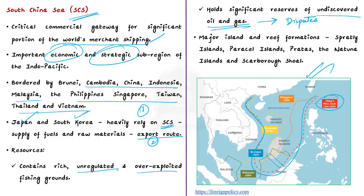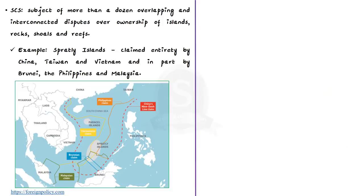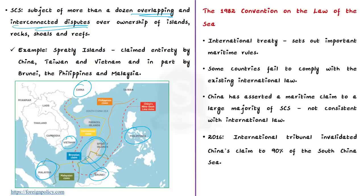The South China Sea is frequently the subject of more than a dozen overlapping disputes about who controls various islands, rocks, shoals, and reefs. For example, the Spratly Islands are claimed entirely by China, Taiwan, and Vietnam, with parts also claimed by Brunei, Philippines, and Malaysia. In such a complex environment, it is important to have well-established rules of international law — the 1982 UN Convention on the Law of the Seas, or UNCLOS. Unfortunately, some countries fail to comply with existing international law.